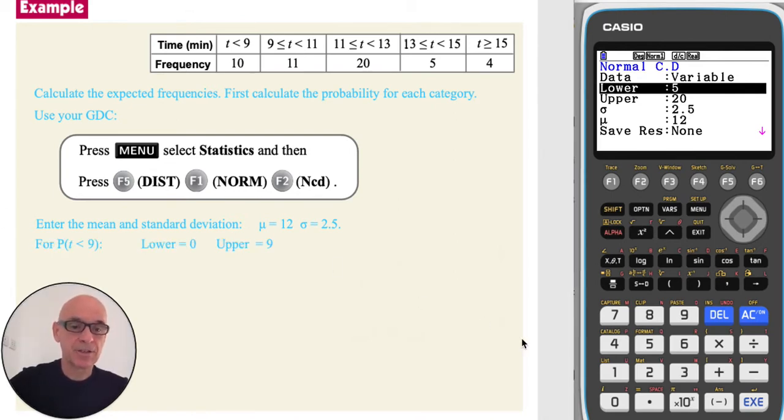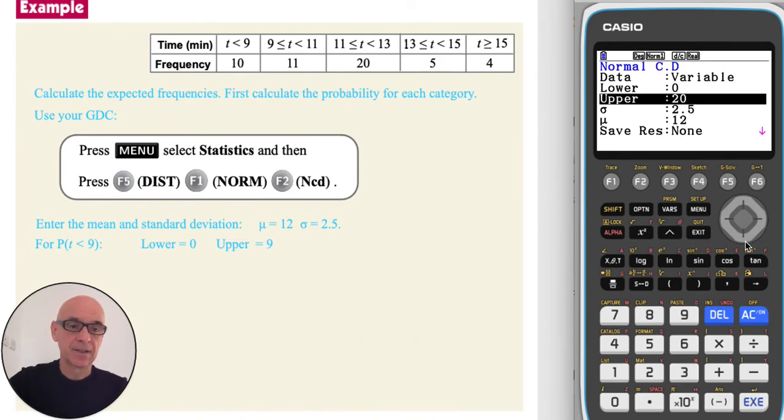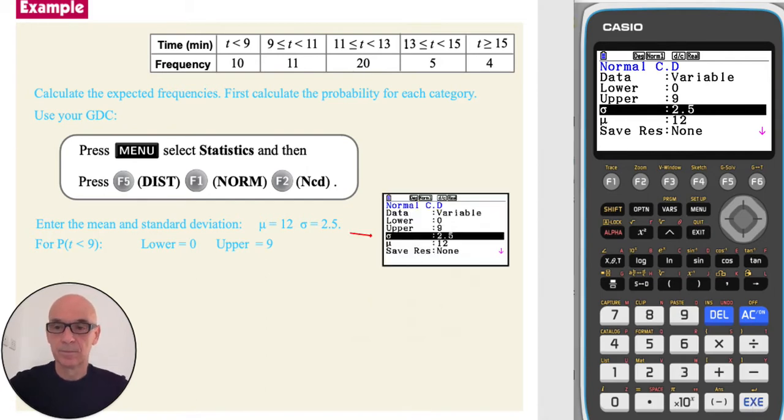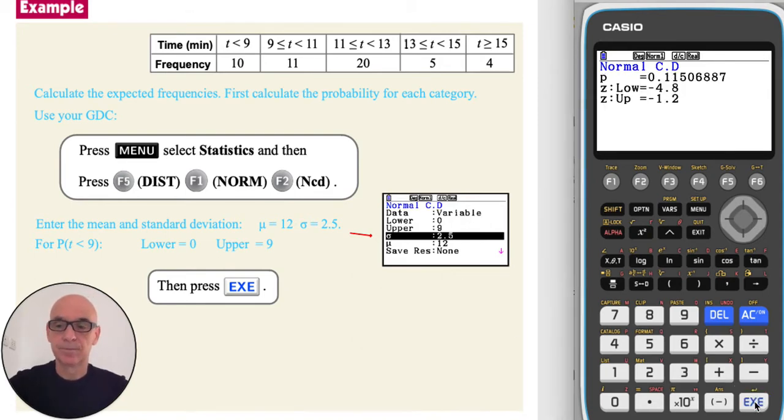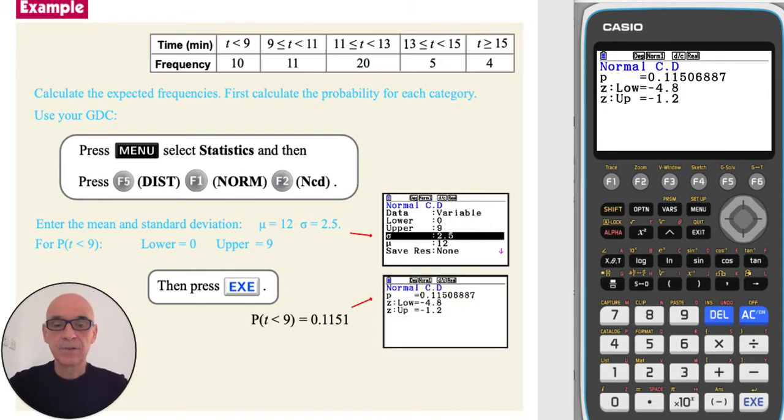For the first category we can set a lower limit of zero minutes and an upper limit of nine minutes. Press and execute to perform the calculation, giving a probability of 0.1151.